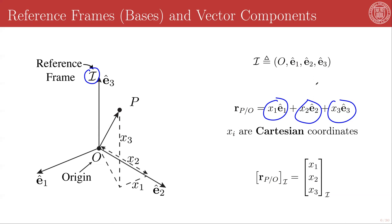And I can then split this position vector into components in this frame with measure numbers x_1, x_2, x_3. And these measure numbers map directly to the Cartesian coordinates of that. And so finally, I can denote all of this by using this array notation, always keeping track of what frame I'm expressing the components in.